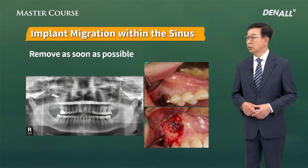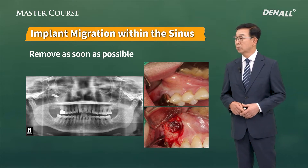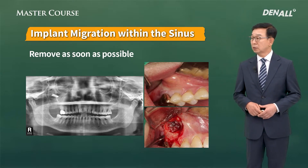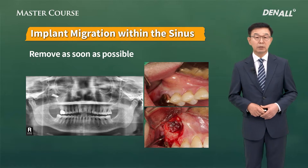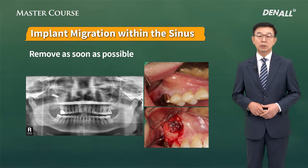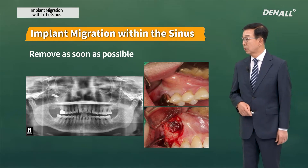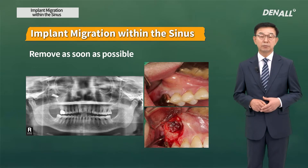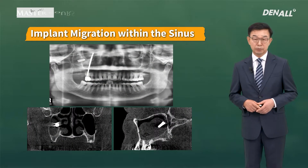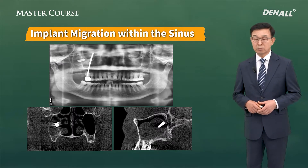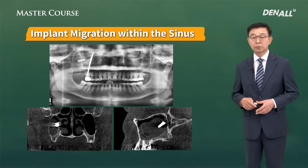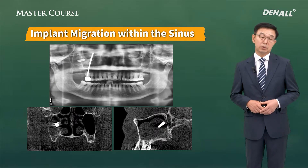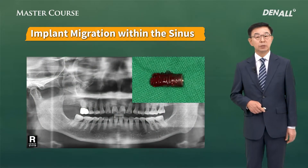In this patient's case, in number 17 in the maxilla, crestal approach was done and the implant was placed. The implant migrated into the sinus and was left untouched for four months before the patient came to my dental clinic. Lateral window approach was used to remove the implant. However, it was very difficult because there was infection and granulation tissue within the sinus. It's very difficult to find the implant position in such a case. CT was taken to check the implant position and the implant was removed.